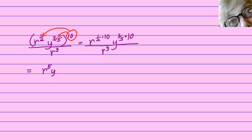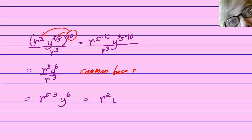One-half times ten is five, and three-fifths times ten is six. So we'll have r to the fifth times y to the sixth over r to the third. Now here's the tricky part: notice that the r's are like bases, so we have to subtract those exponents — r raised to the five minus three power, multiplied by y to the sixth. That will be r squared y to the sixth, and that is your answer. Be careful when you're doing this problem.